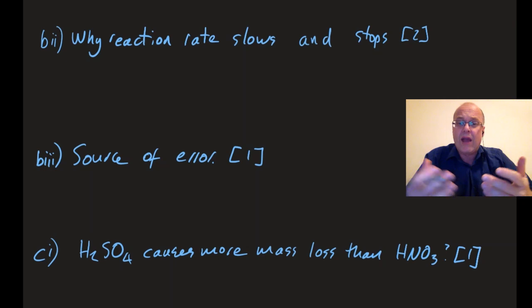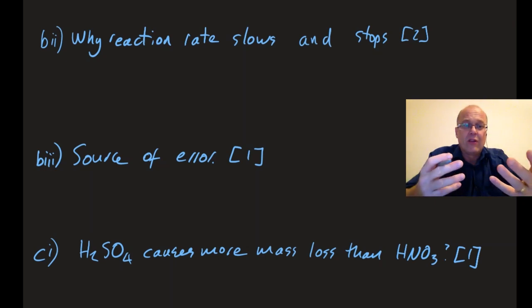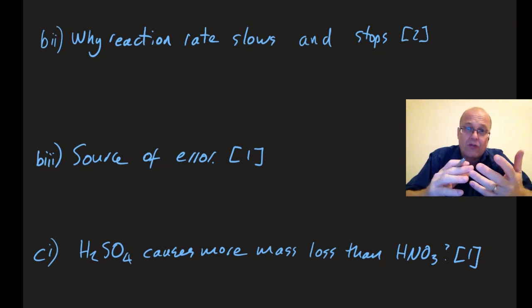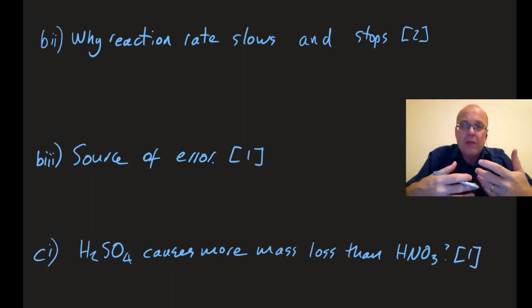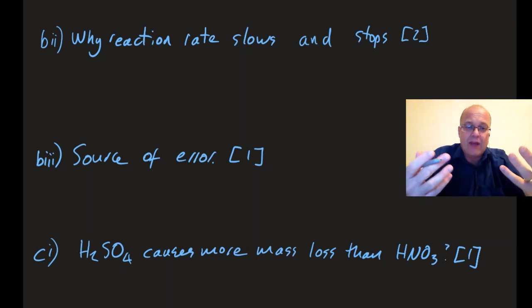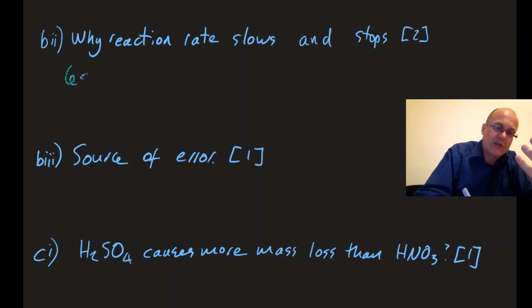Part bii: why does the reaction rate slow and then stop? It's all collision theory. The reactants have to collide in the correct geometry with energy equal to or greater than activation energy. It slows down because there are less collisions with the reactants, or less frequent collisions.